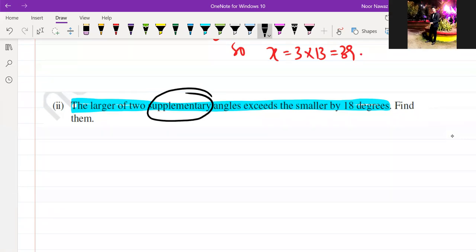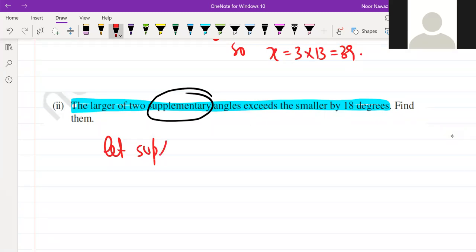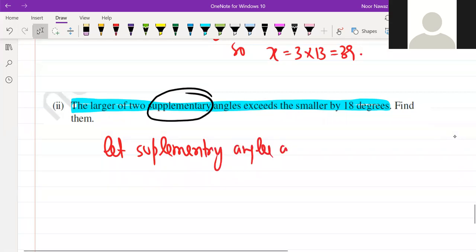So we start from here. Let supplementary angles are X. If we take larger and smaller, then it will be good. So we have to do the entry angles. Very good. X and Y.